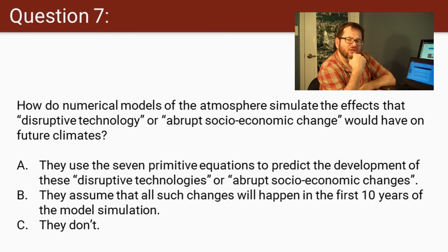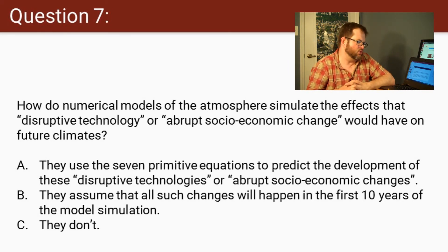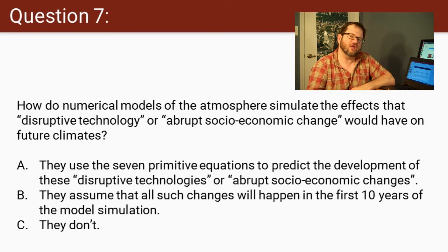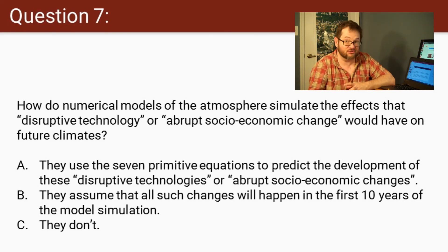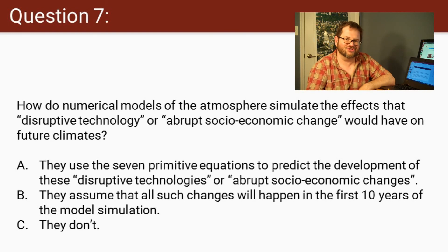We've made it to the end of this long lecture. Let me ask you a couple more questions. Question seven: How do numerical models of the atmosphere simulate the effects of something like disruptive technology or abrupt socioeconomic change and how that would affect future climates? Is it A, they use the seven primitive equations to predict these disruptive technologies or abrupt changes? Is it B, they assume all sorts of changes will happen in the first 10 years of a model simulation? Or C, they don't. Make a choice and get a little feedback before you move on to question eight.